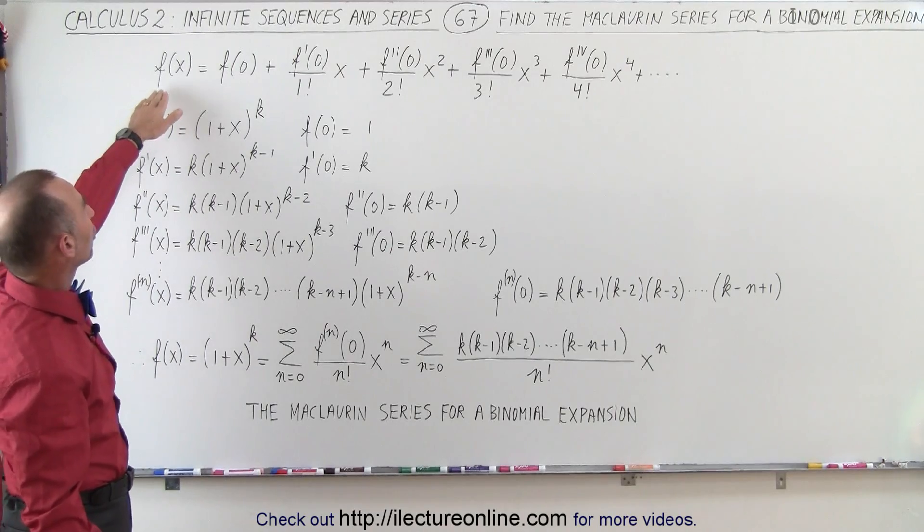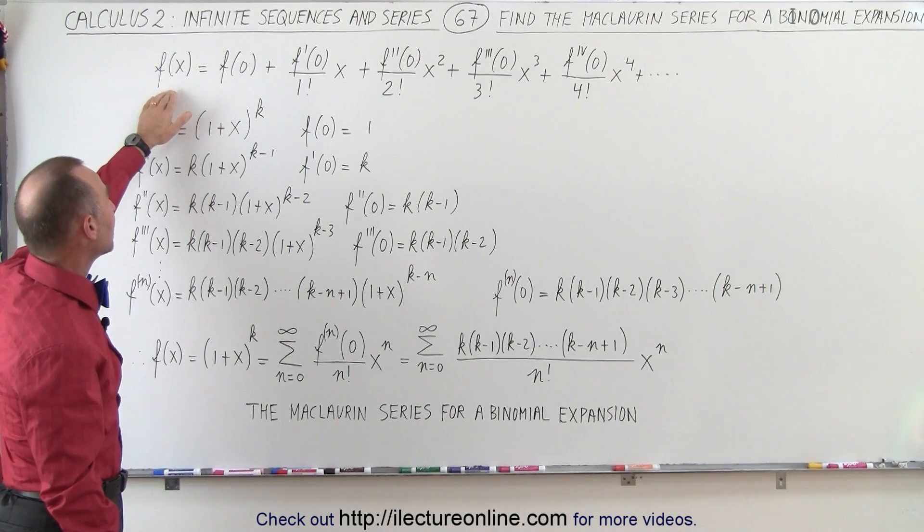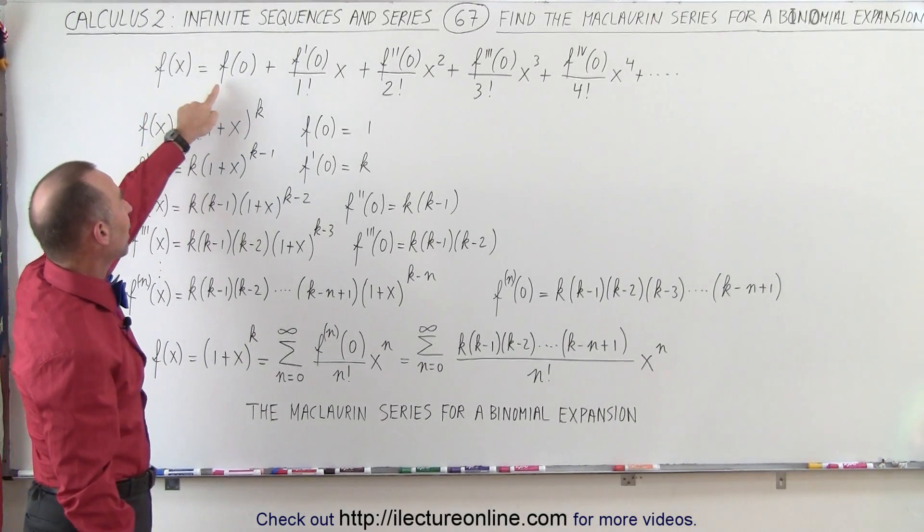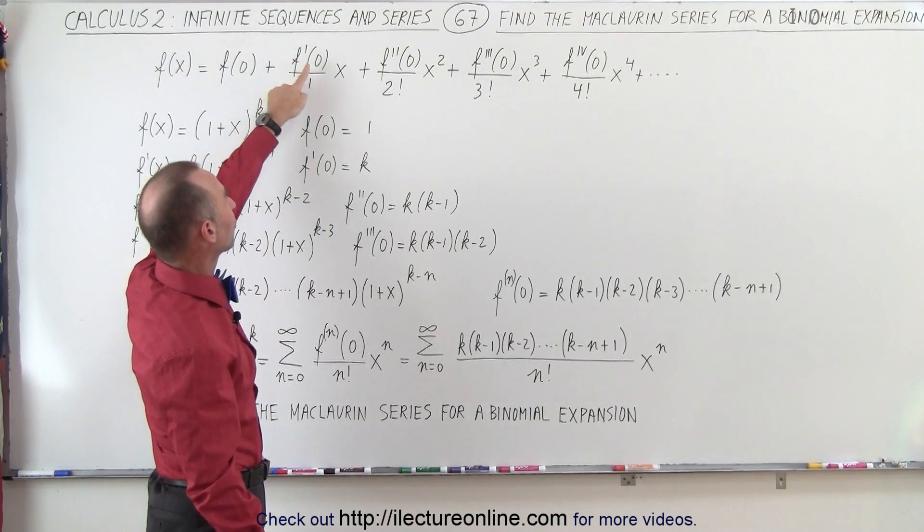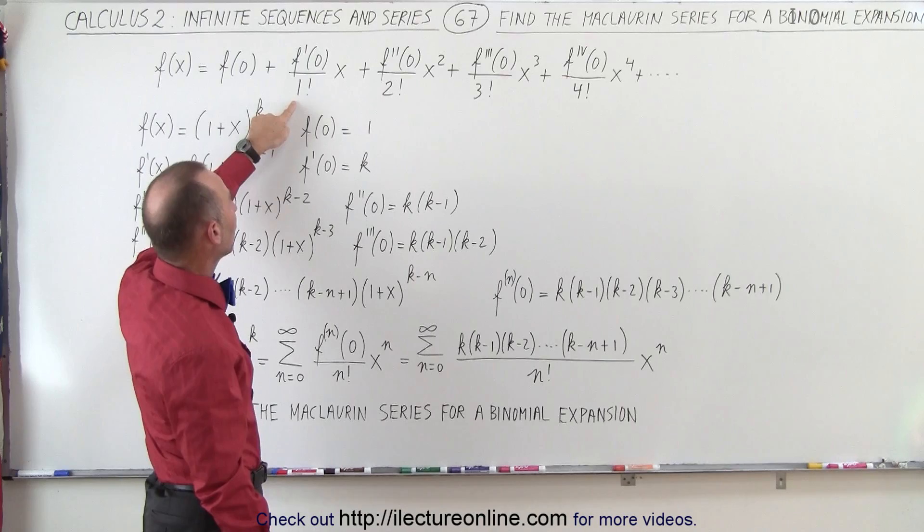And then we realize that the Maclaurin series can be defined as the function f of x can be described as the function evaluated at 0 plus the first derivative of the function evaluated at 0 divided by 1 factorial times x